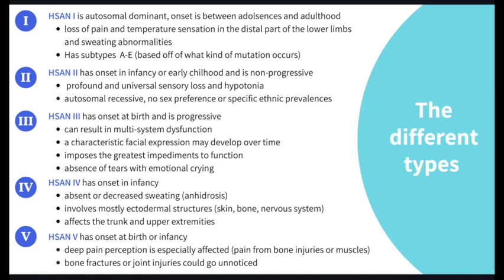HSAN 3 has onset at birth and is progressive. It can result in multi-system dysfunction and has a characteristic facial expression that may develop over time. It imposes the greatest impediments to function, and you can see absence of tears with emotional crying.